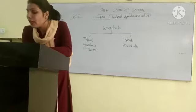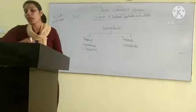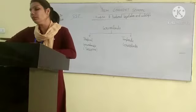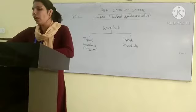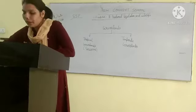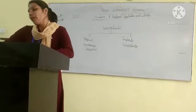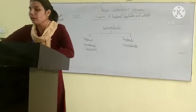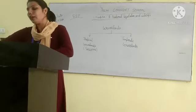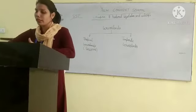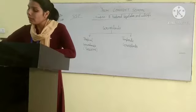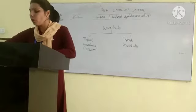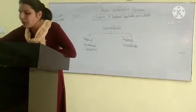Temperate grasslands are found in the middle latitudes, in the interior of continents. They are located between 40 degrees and 55 degrees latitudes in both hemispheres. These grasslands are known by different names, such as steppes.